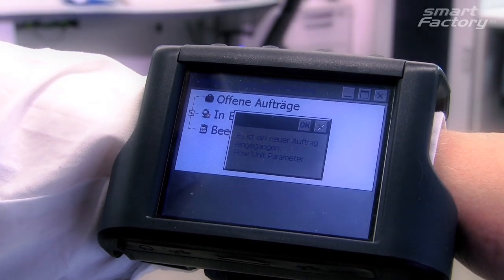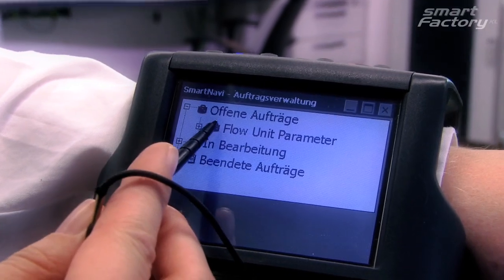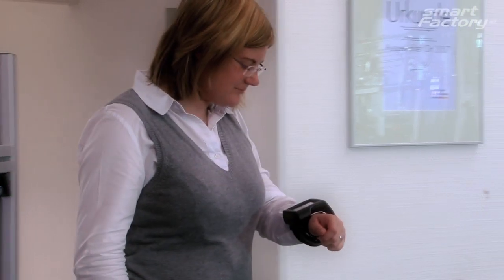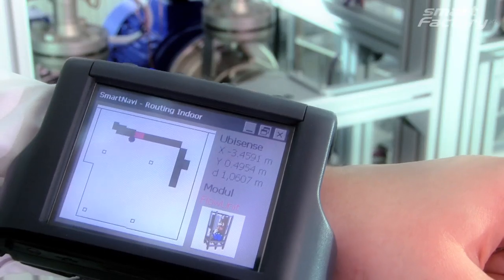Cables give us implicit information about the place of interaction. When switching to wireless technologies, we need to get this location information by other means. This is very important when talking about human interaction, because this is often dependent on a specific context.